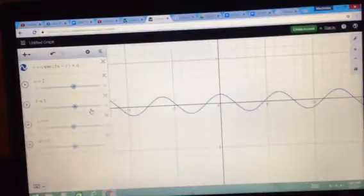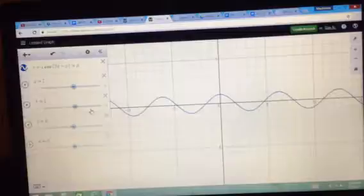I have Desmos pulled up so you can have a better visual representation of what I did to my graph. Right now I have the parent cosine function graphed and I have all the variables in their equation that I'm going to be replacing.